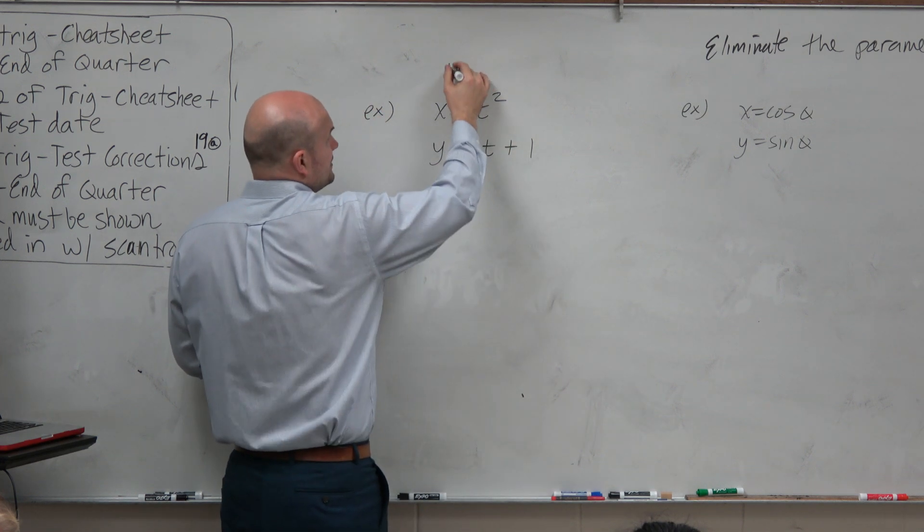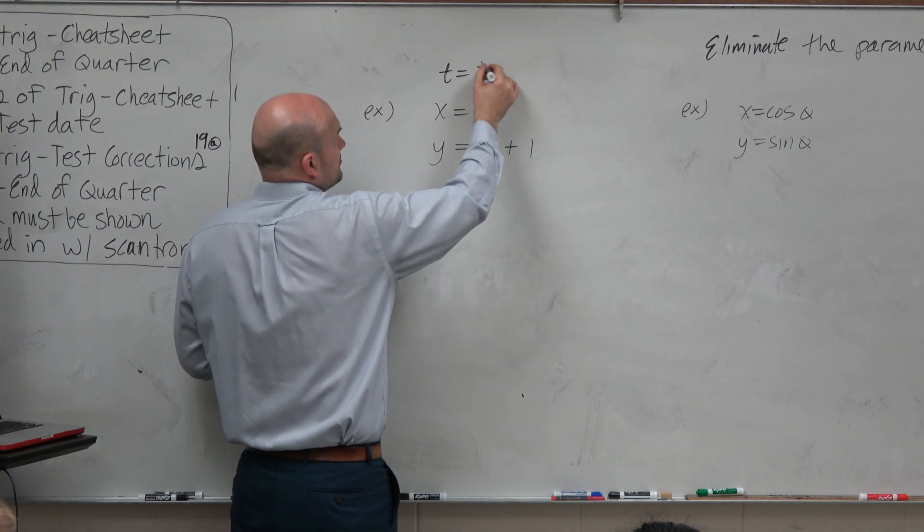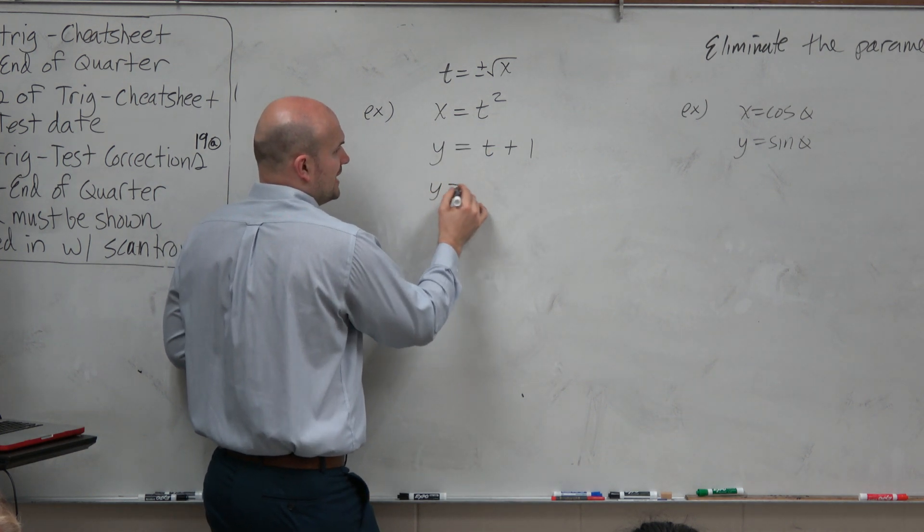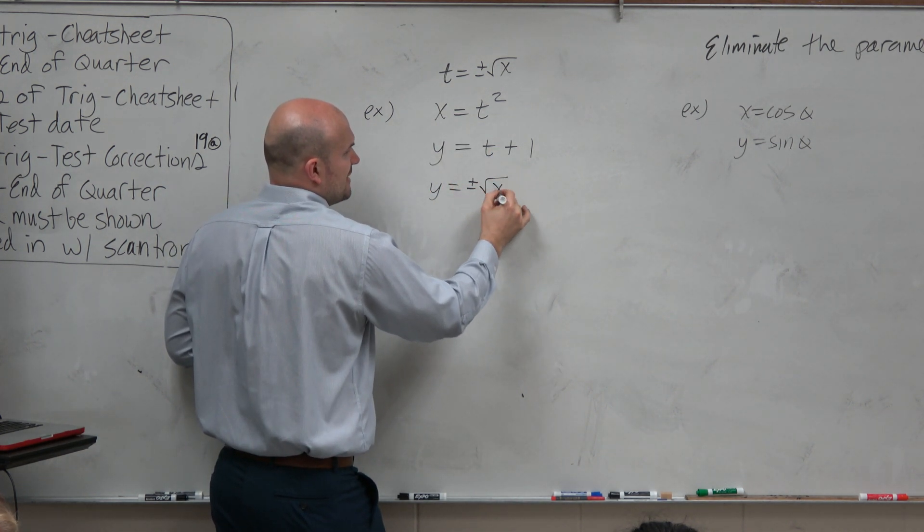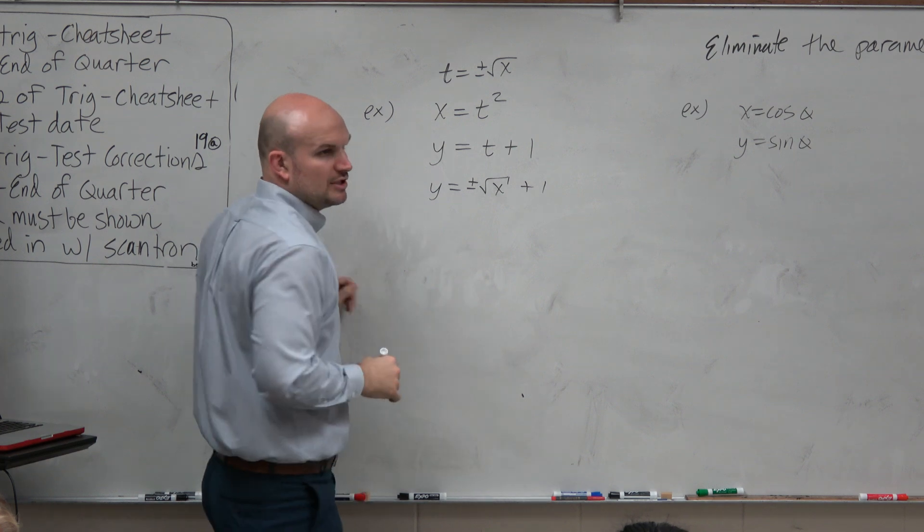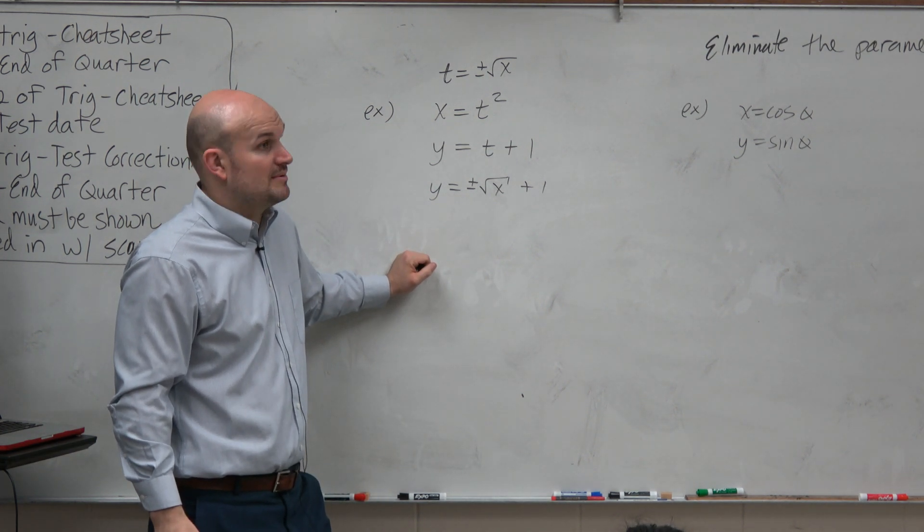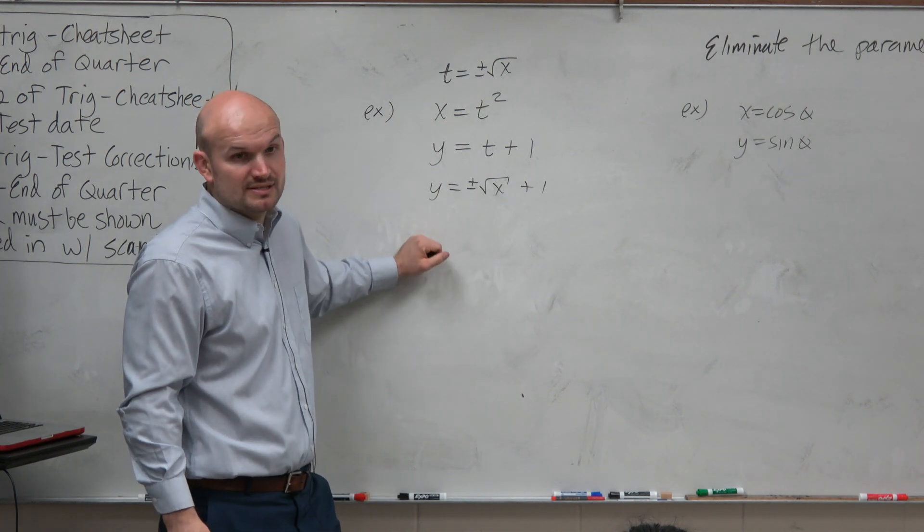So if you solve this for t, you would get t equals plus or minus the square root of x. Plug that into the equation, y equals plus or minus the square root of x plus 1. Does anybody know what that graph looks like? Does anybody know what the curve is?